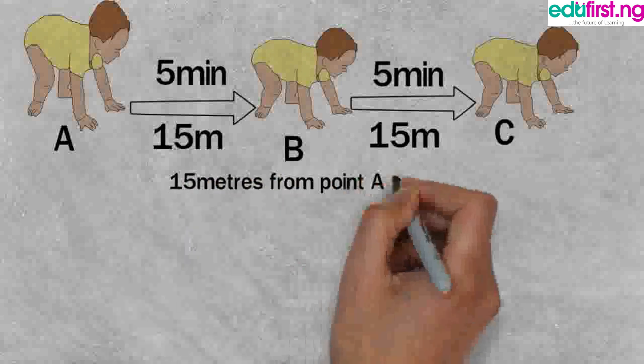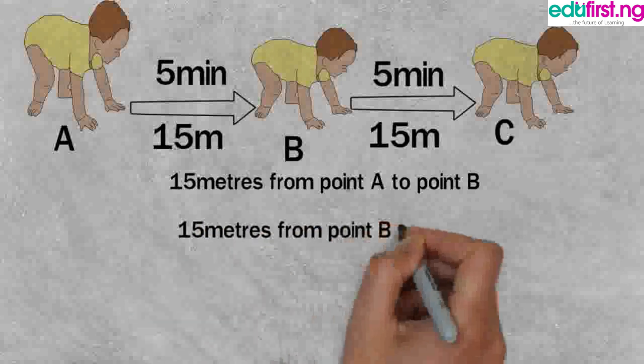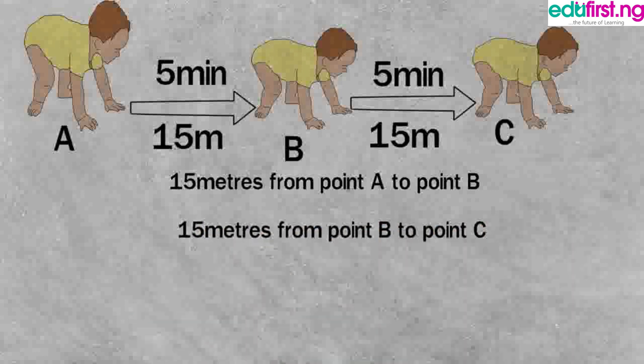Now it can be said that the baby has covered a distance of 15 meters from point A to B, then another 15 meters from point B to C, making a total distance of 30 meters. 30 meters is the total ground the baby has covered during its motion.